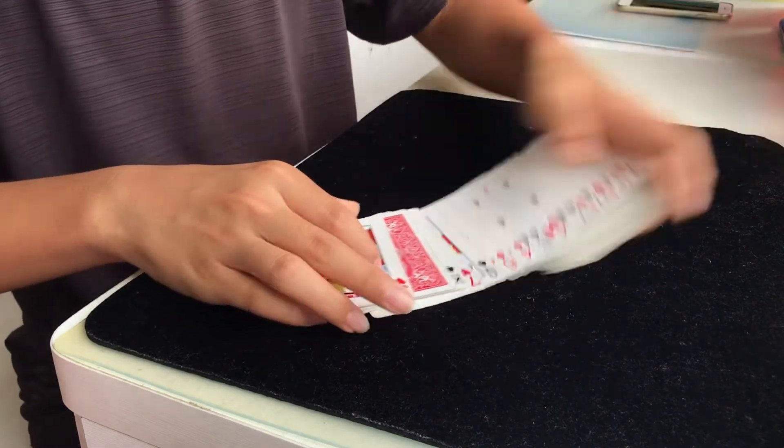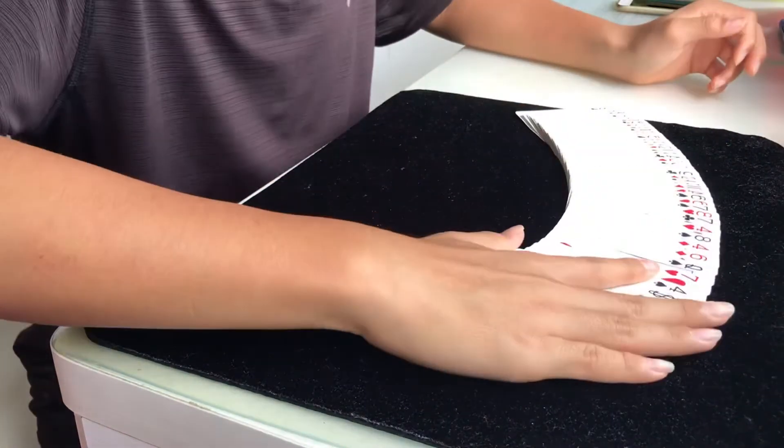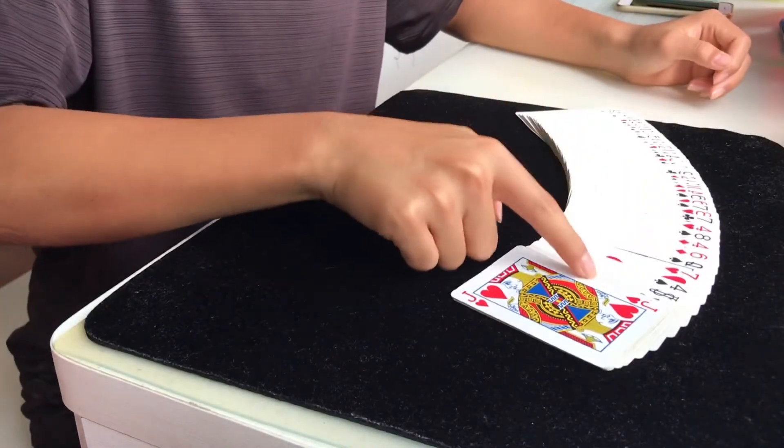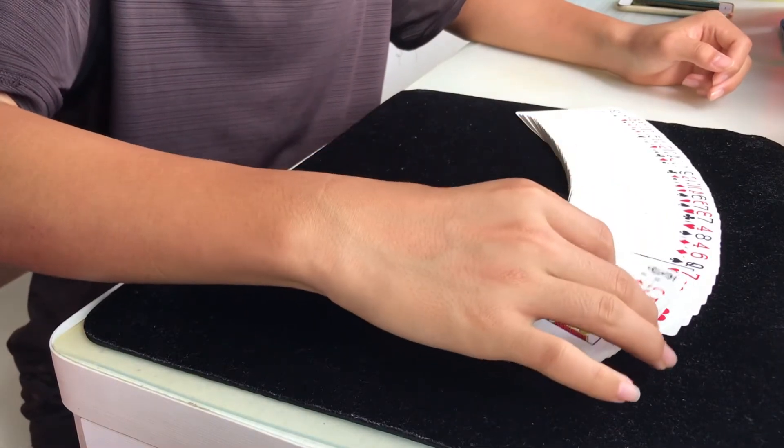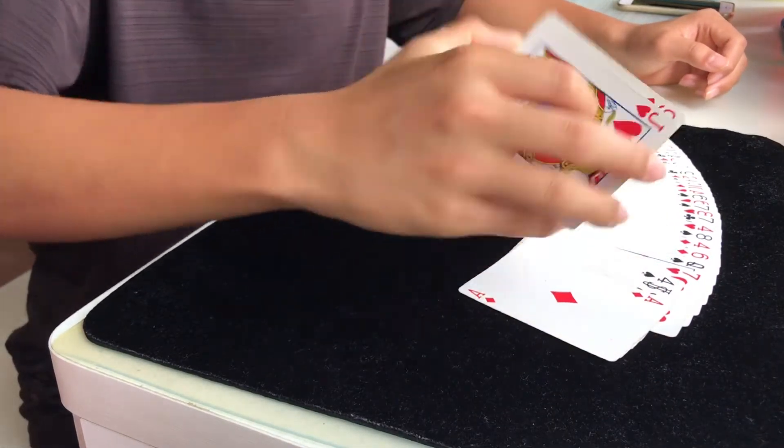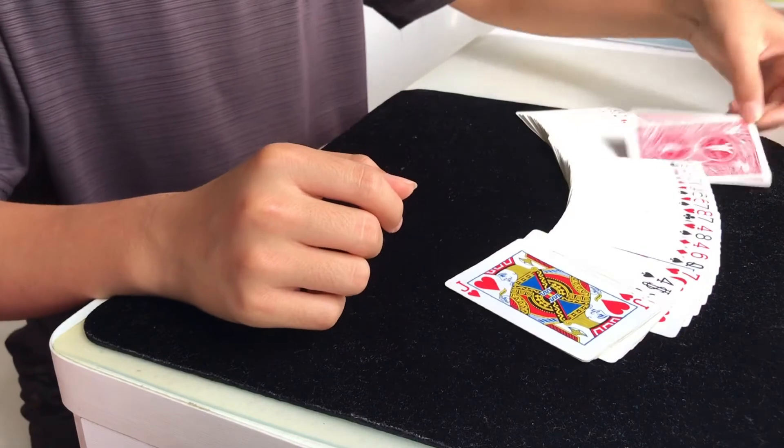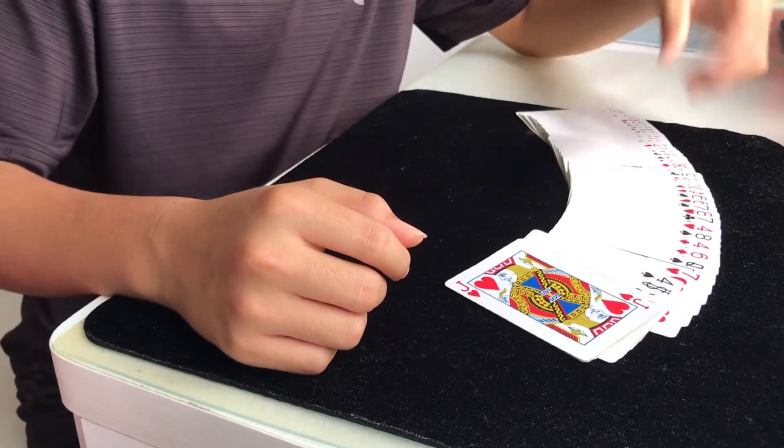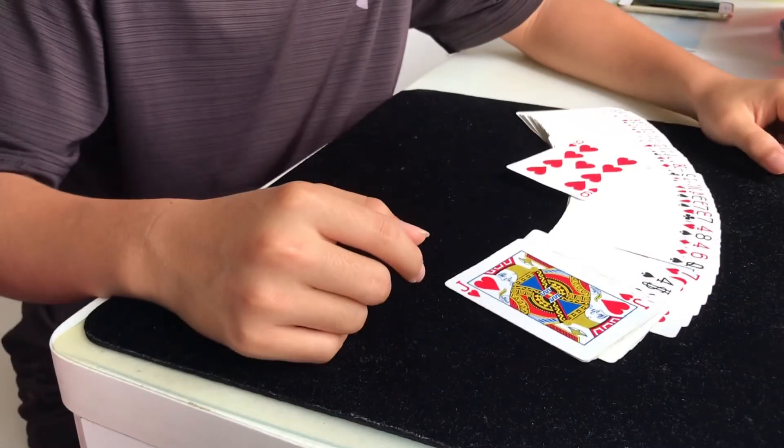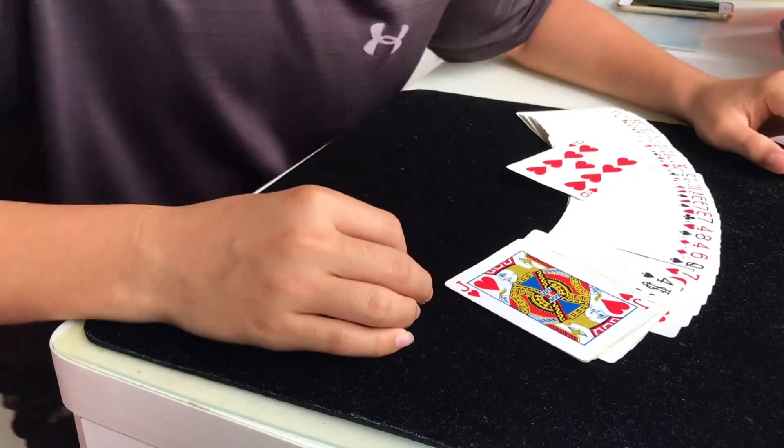So you want to spread like this until you leave a chunk like four to five cards at the end, and then you reveal that you have found the Nine of Hearts. And that's it, that's the tutorial.